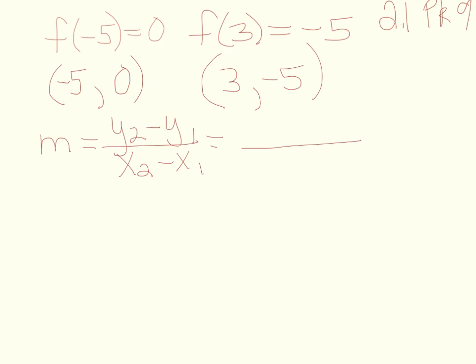So, if I start with the minus 5, I would say minus 5, minus, and then look over here, 0. And then start here with 3, and subtract a minus 5. So, minus 5 minus 0 is still minus 5. And 3 minus a minus 5 would be 3 plus 5, or 8. So, my slope is minus 5 over 8.